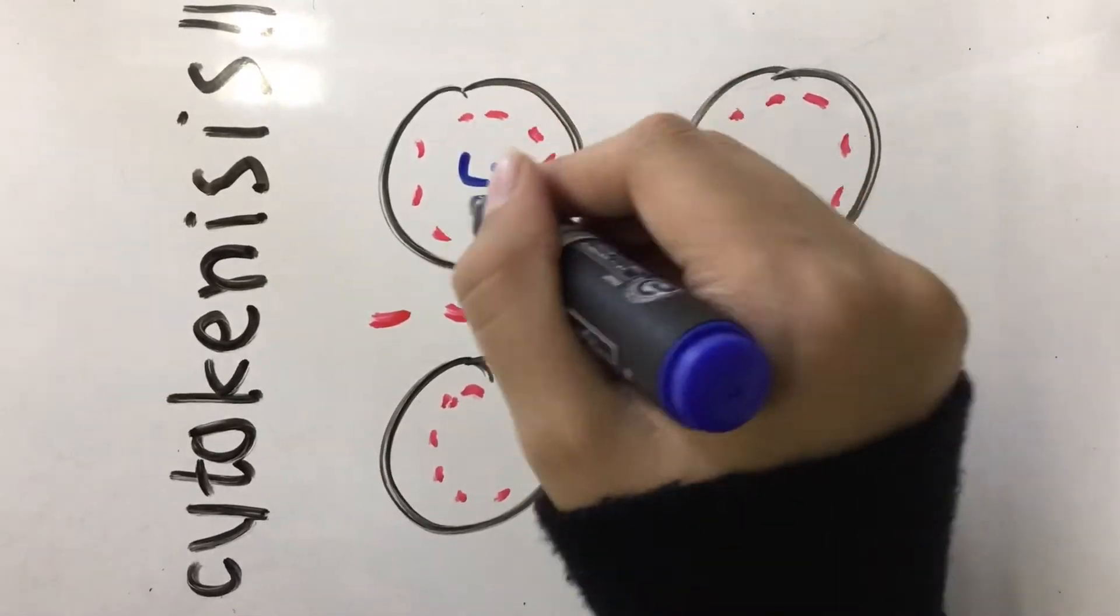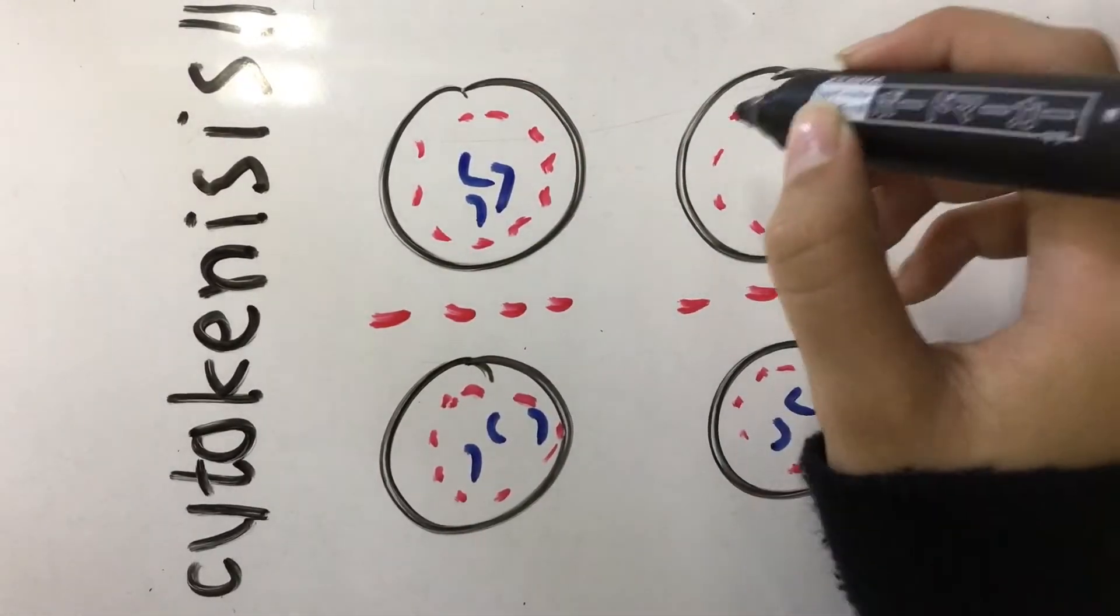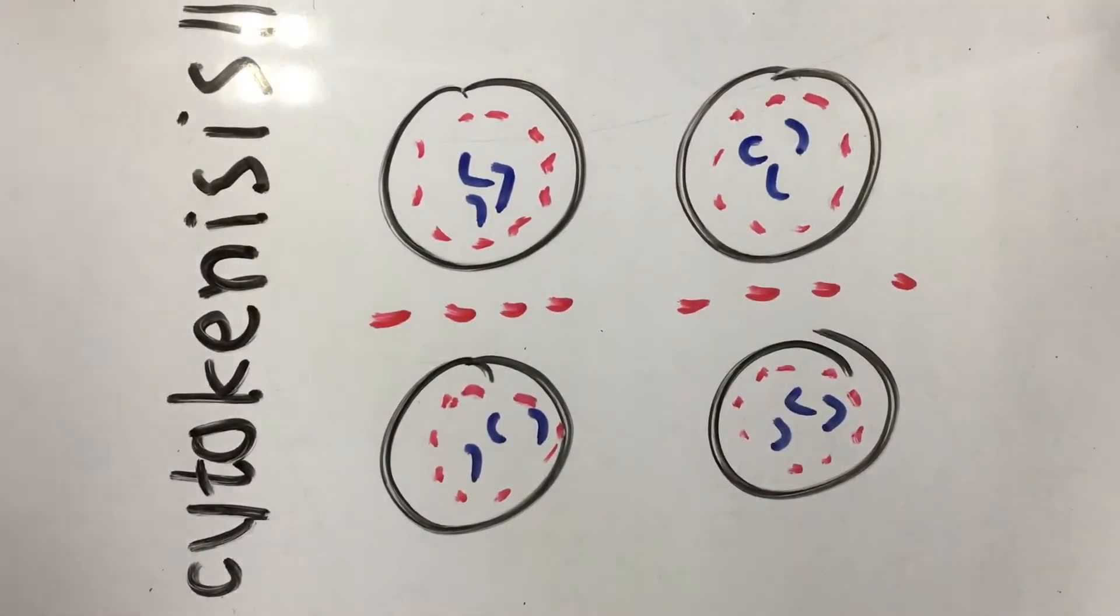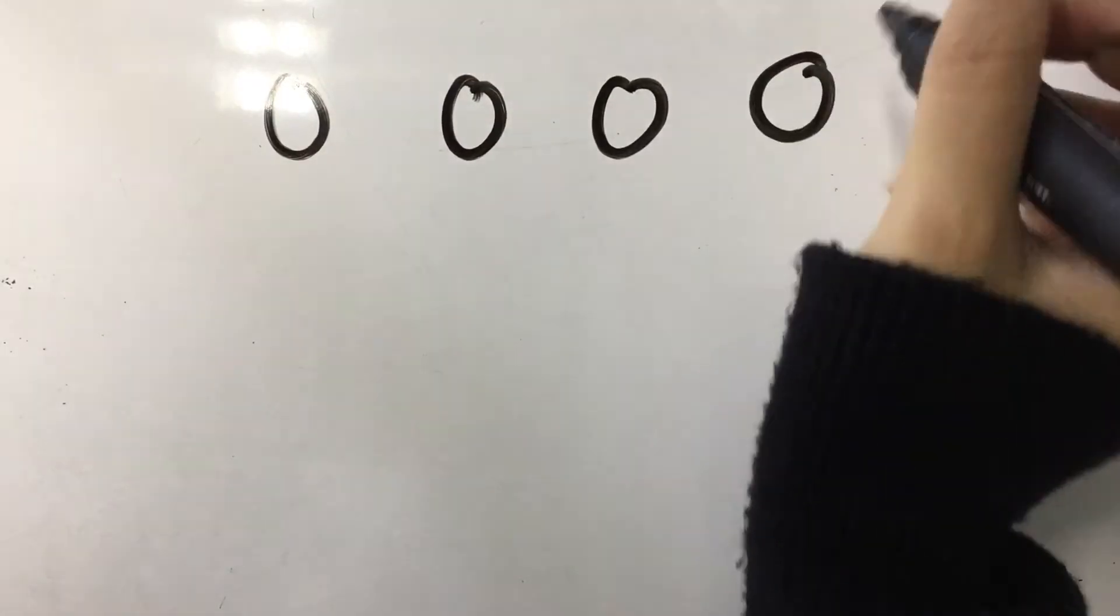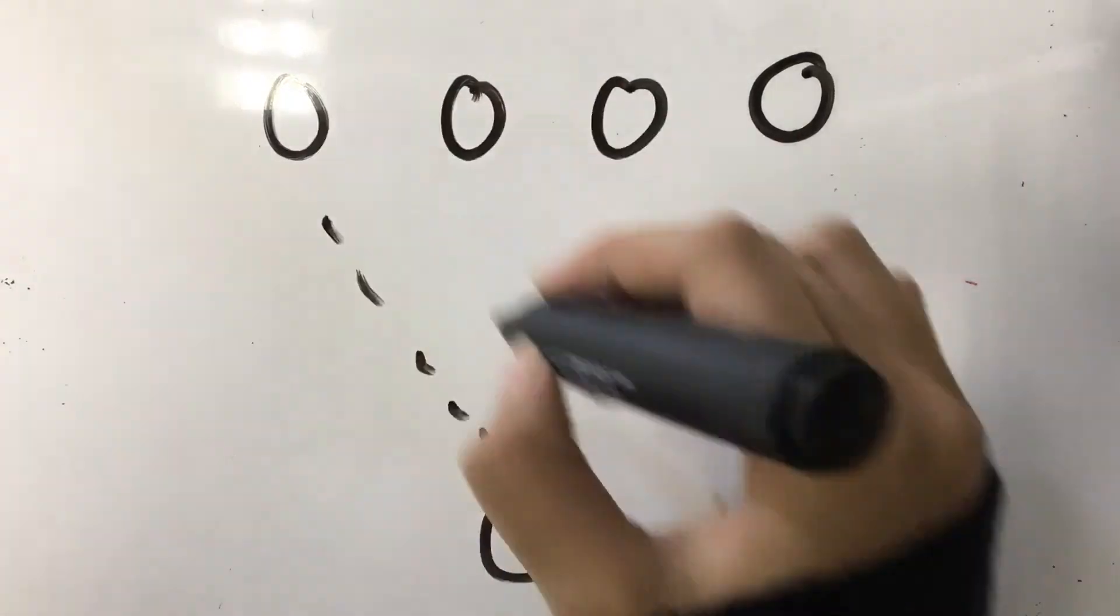And lastly is cytokinesis 2. The two new nuclei move apart and the cell splits. Now we're left with four granddaughter cells, each genetically distinct to their parents.